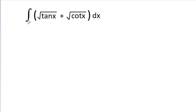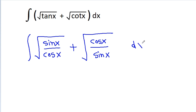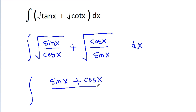In this video, we have to find the integration of square root of tan x plus square root of cot x dx. So, it is integration of root tan x, which is root of sin x by cos x, whereas root cot x is root of cos x by sin x dx. And now we get integration of sin x plus cos x by root of sin x into cos x dx.